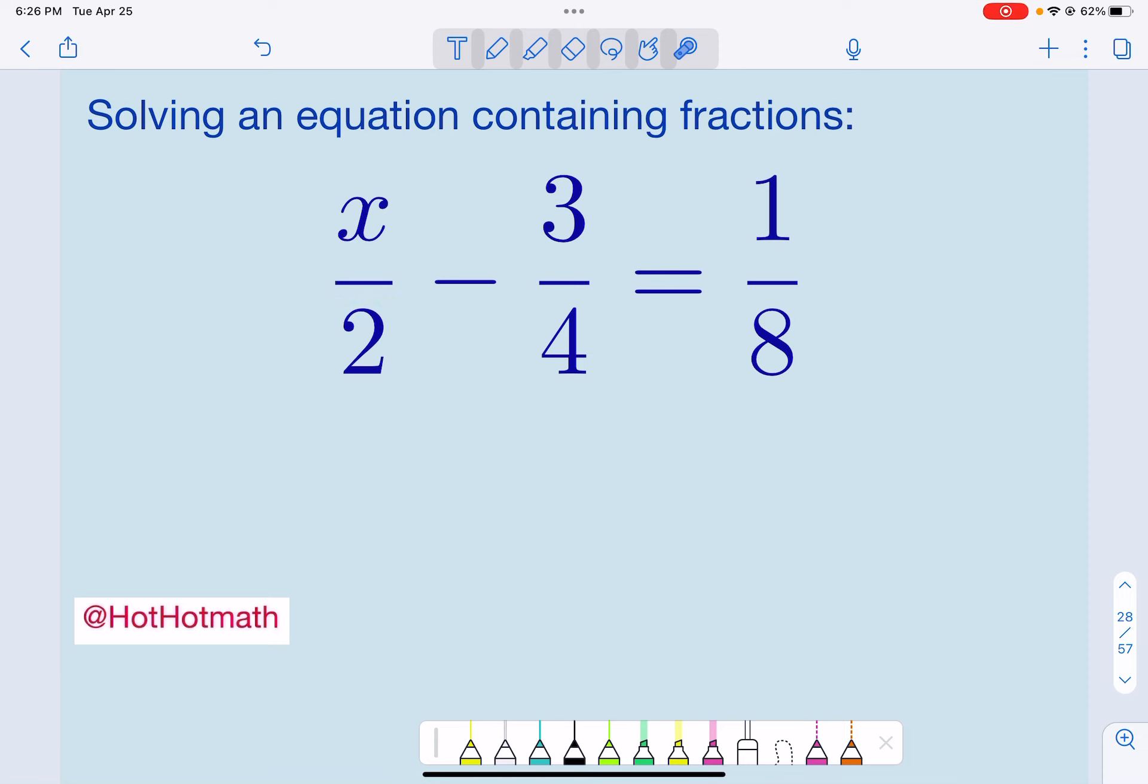Well, what's really great is that 2 and 4 both are divisible into 8. Now that's going to make things really nice because what we can do is multiply through by that least common multiple.